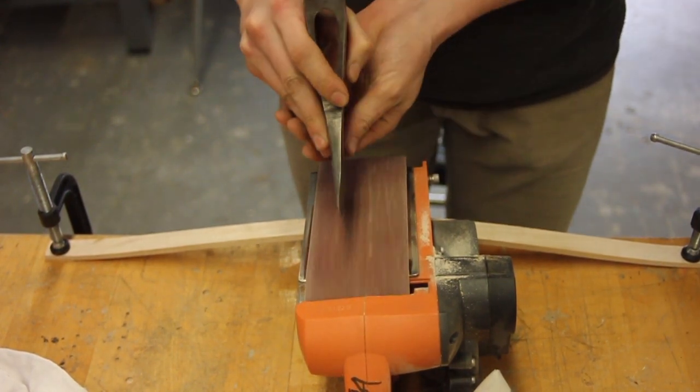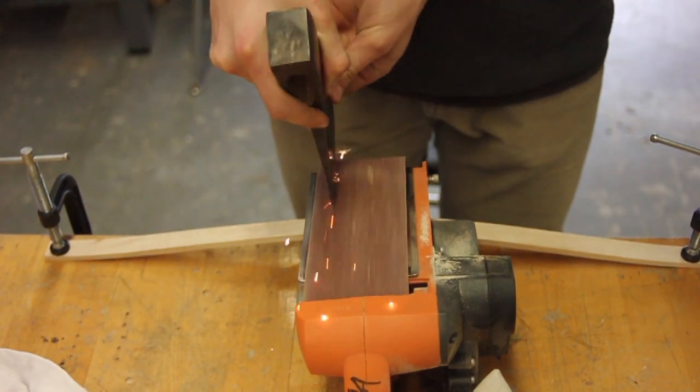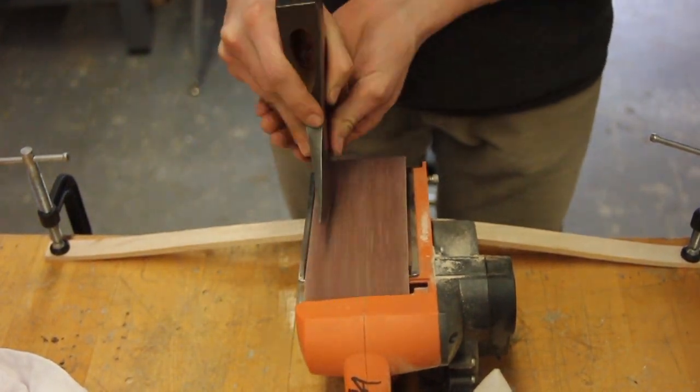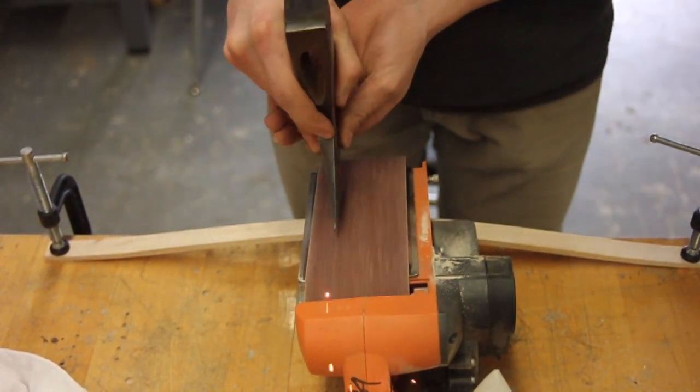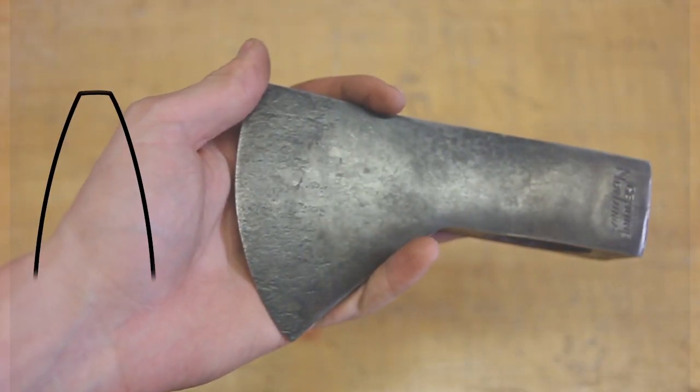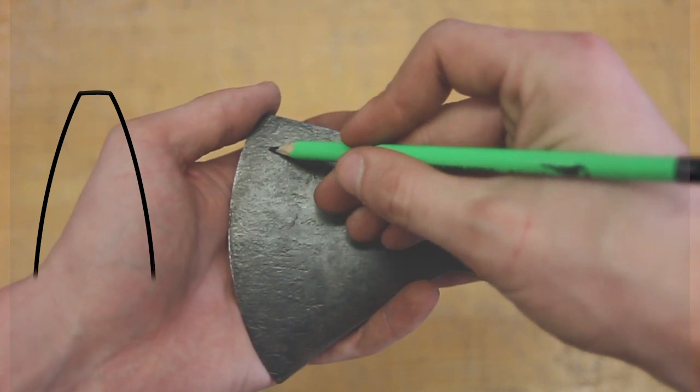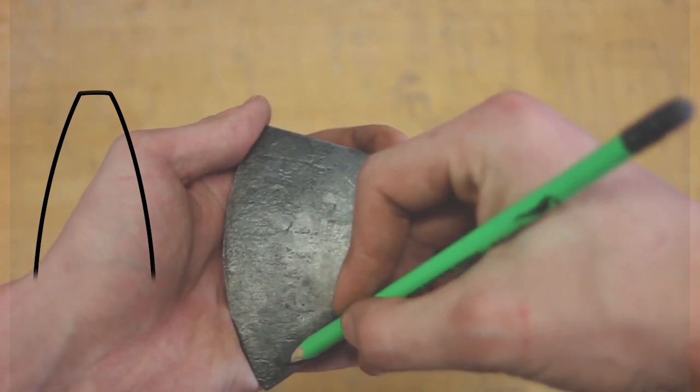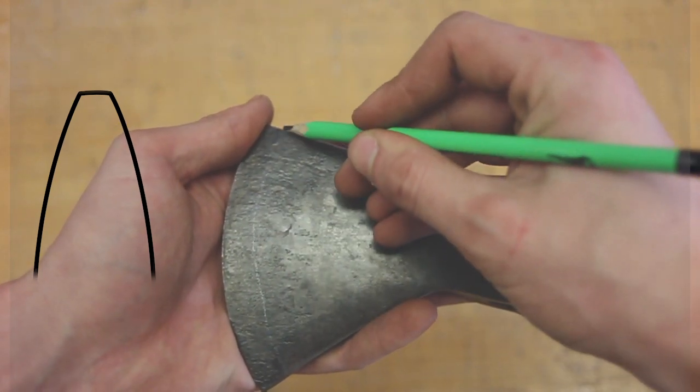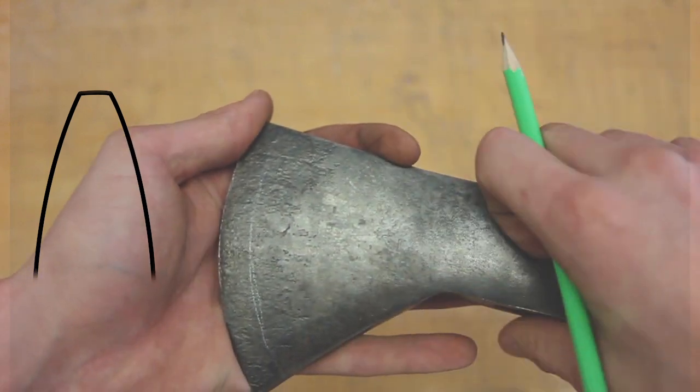Now the next step is to clean up some of the chips and nicks in the edge of the blade, and I'm doing that just by grinding the edge back. You can see I'm just drawing in a little bit of a guide for myself to understand how much steel I need to remove in order to bring this edge back to a proper axe grind.